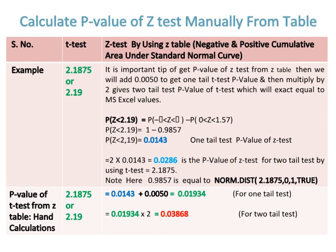The probability of 2.19 is 0.9857. By subtracting from 1 gives 0.0143 for one tail test p-value of z-test. After that, probability of z-test is multiplied by 2 to get 0.0286, which is p-value of z-test for two tail test.